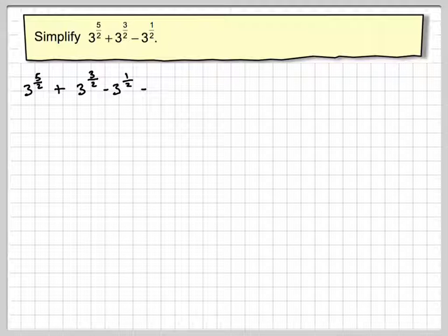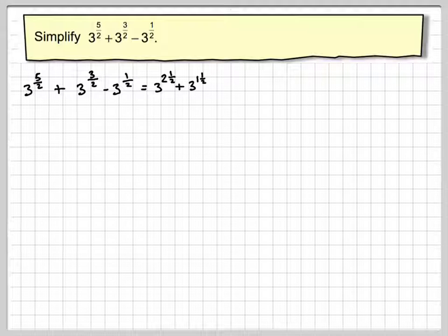Right, we're going to write that as a mixed number. We're going to have 3 to the 2 and a half plus 3 to the 1 and a half minus 3 to the half.